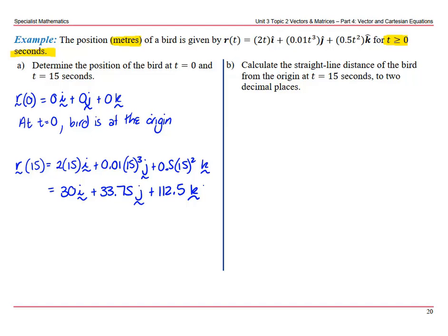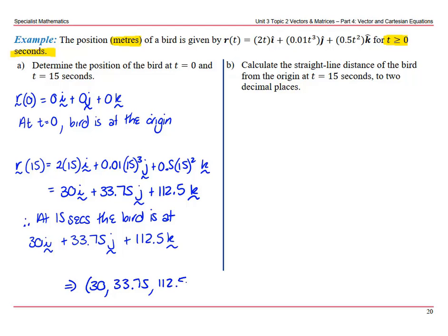Finish with the therefore statement. At 15 seconds, the bird is at 30i plus 33.75j plus 112.5k. And if you wanted to think about that as a coordinate, it would be (30, 33.75, 112.5).